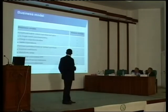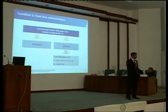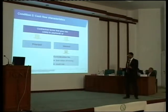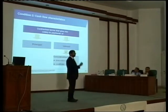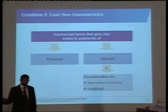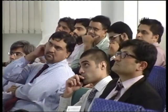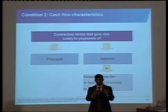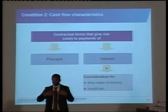The second requirement is very interesting. The contractual terms of the instrument must give rise to only payments of principal and interest. Principal is the amount outstanding. Interest is defined specifically here as only a return for time value and credit risk. If there's a return for anything else, you fail SPPI. The return on the instrument must only be for time value and credit risk. The moment there is no one-to-one correlation between time value and credit risk, you fail SPPI. The moment there is leverage, you fail SPPI.